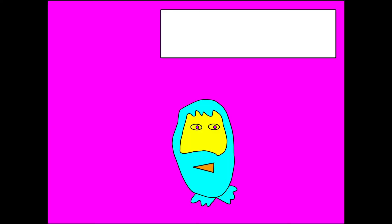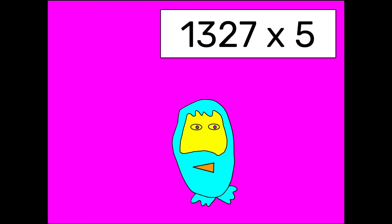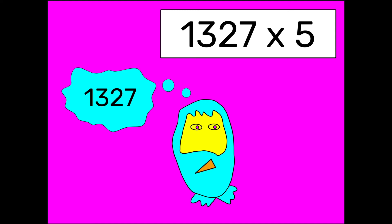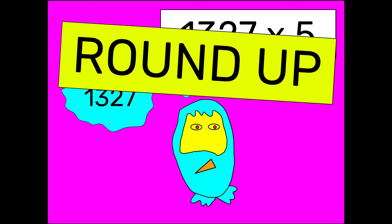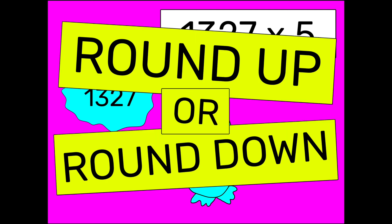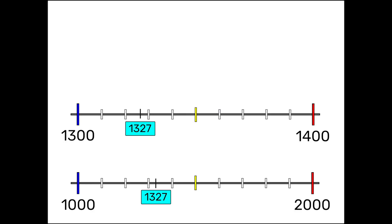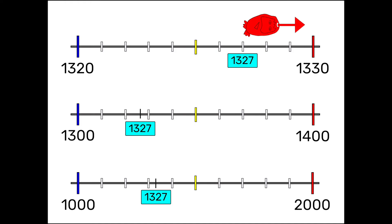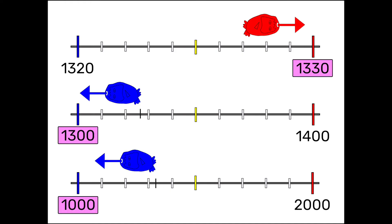When you approximate calculations, when you estimate calculations, make those numbers easier to remember. Round up or round down to the nearest thousand, hundred, ten. Just round, round, round, round.